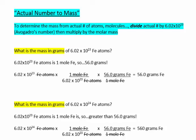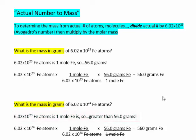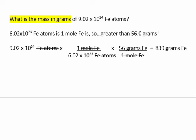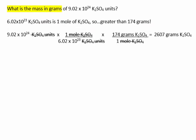What is the mass of 6.02 times 10 to the 24th iron atoms, which is 10 times greater than the previous problem? The answer is 560 grams, because this is 10 times more than 1 mole. Now given 9.02 times 10 to the 24th iron atoms, we anticipate the answer in grams to be greater than 56 because that's greater than 1 mole. Dividing the given quantity by Avogadro's number, then multiplying by the molar mass gives 839 grams of iron.